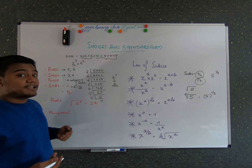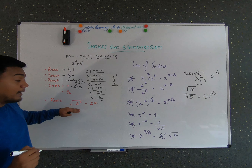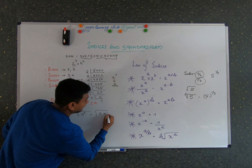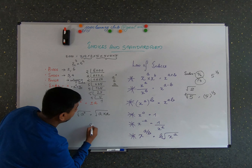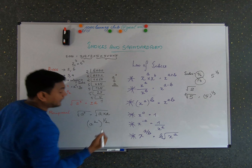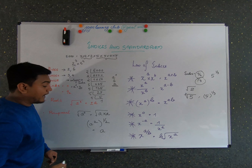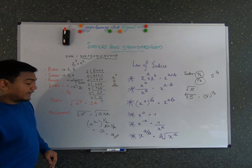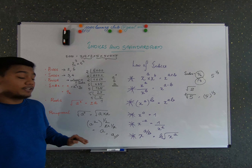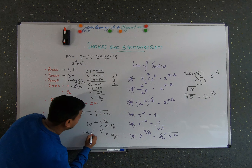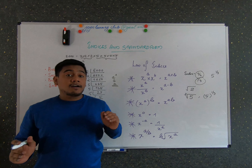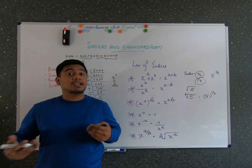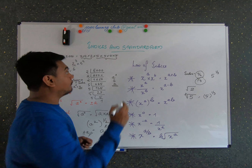Now let's discuss the values we get from roots. For example, take a squared, which is a times a. The square root of a squared is a, but the answer can be plus or minus a. This is because a positive number times a positive number gives a positive result, and a negative number times a negative number also gives a positive result.